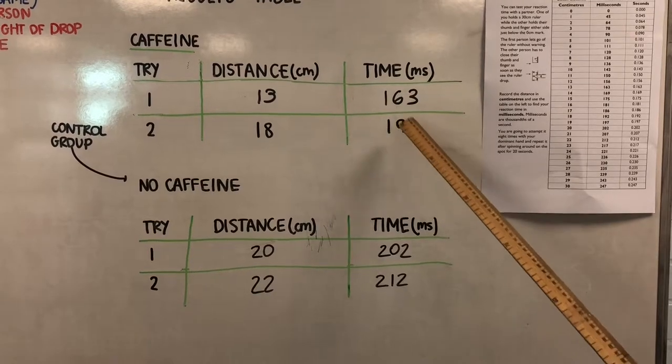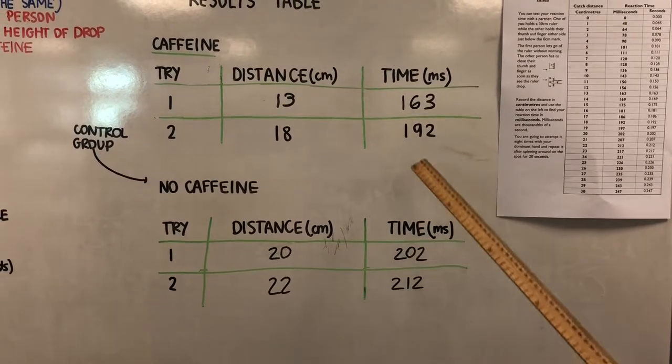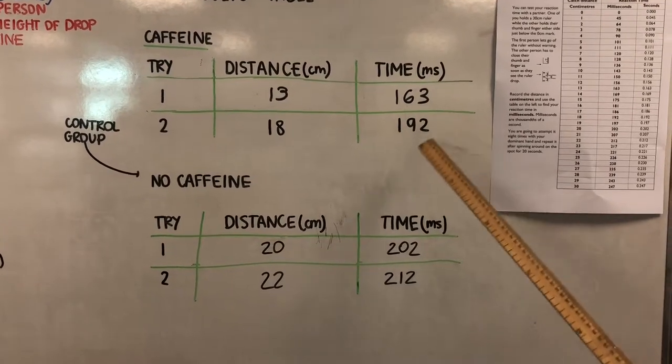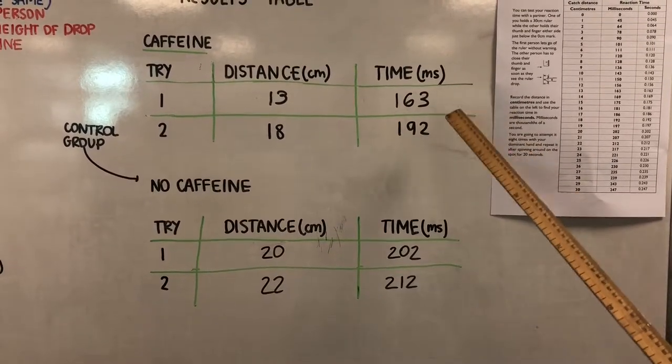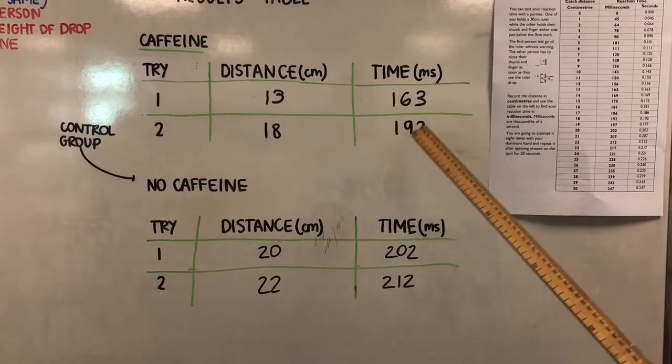You can see that 163 and 192 is less than 202 and 212. That means that the reaction time is shorter, which means that the caffeine has obviously had a stimulating effect on his reaction time, and therefore it is shorter.